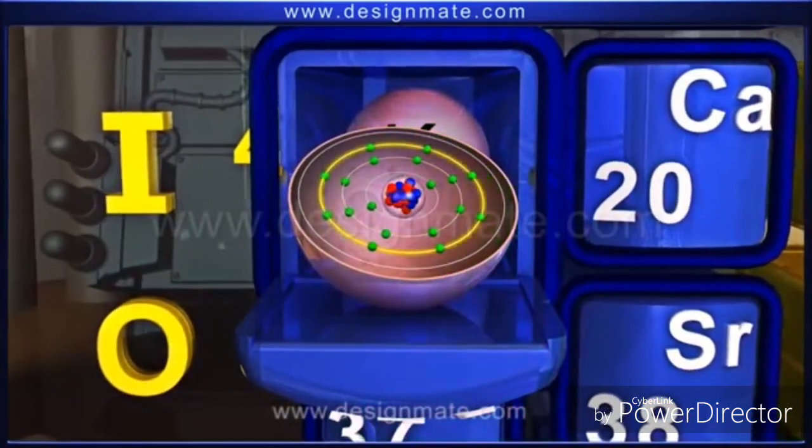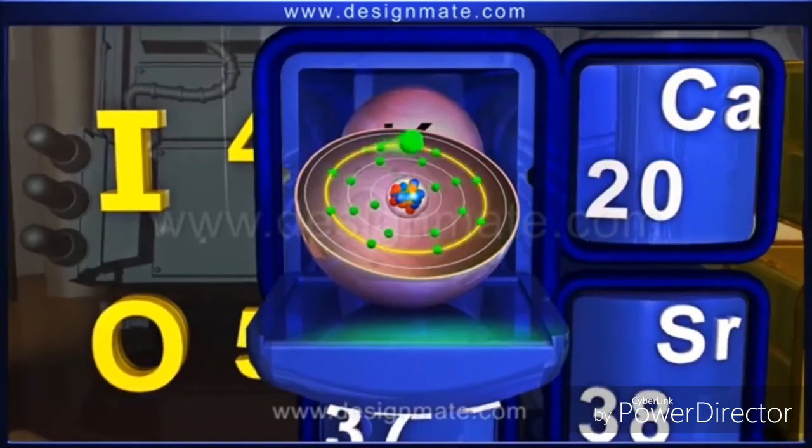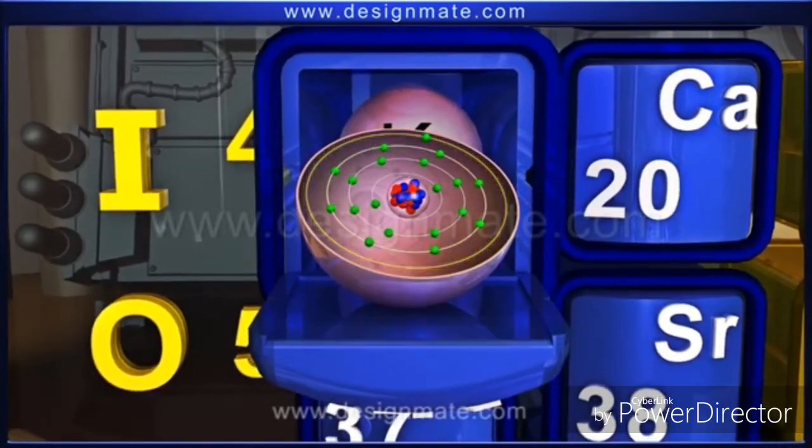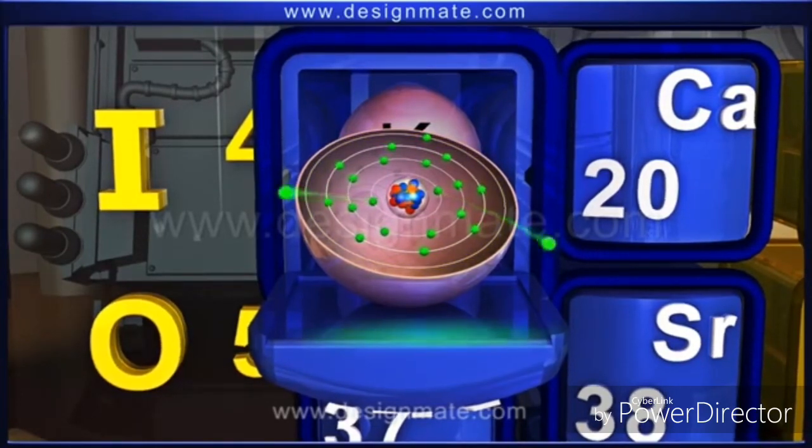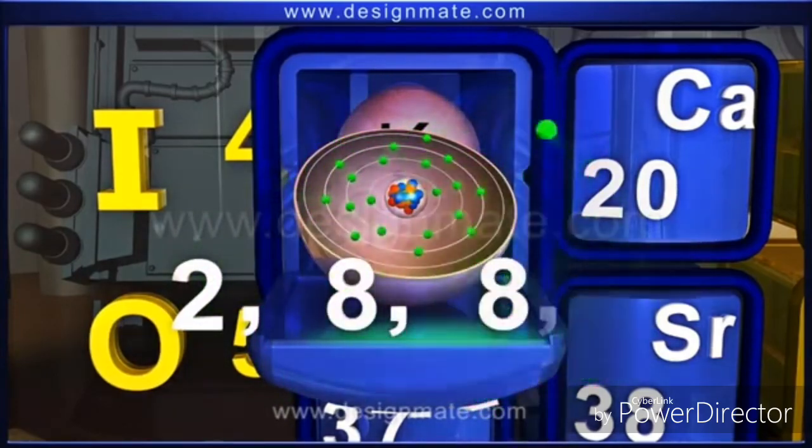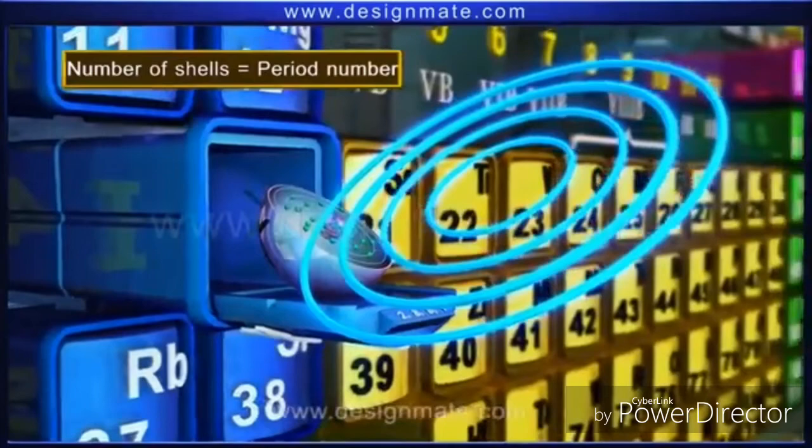There are four levels. The number of levels equals the period number. So from the electronic configuration 2, 8, 8, 1, we can say that potassium belongs to the fourth period.